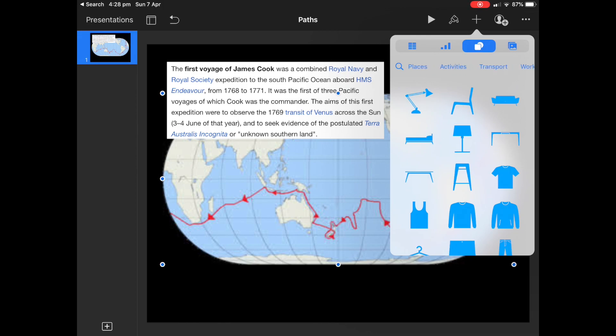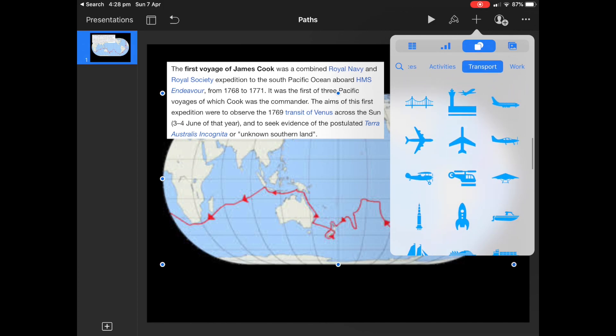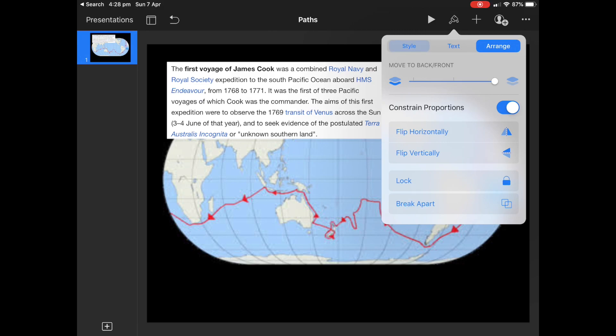I'm just going to bring in a sailing ship so we'll go to transport and see if we can find a little ship to bring in. This one will do and we might just change the color of that to red as well just so that it stands out.